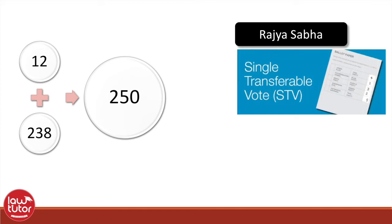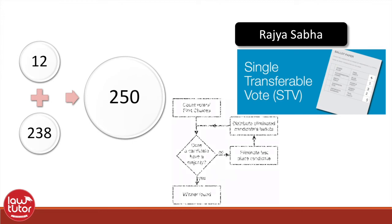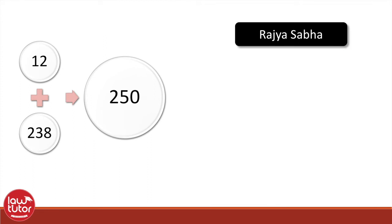The 238 elected members are elected by elected members of the state assemblies in accordance with a single transferable vote system through proportional representation. Under the system, a voter has a single vote that is initially allocated to the most preferred candidate and is transferred to other candidates according to the voter's stated preferences as the count proceeds. Candidates are either elected or eliminated. I will deal with the system of single transferable vote in another video with more clear examples.